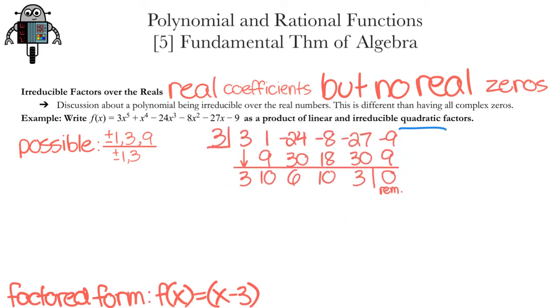Hmm, what should we try next? Well, I see that there are more multiples of 3, but there are also these tens. So I'll try negative 1 next. Drop down the 3, multiply by negative 1, negative 3, add to get 7, and so on. And the remainder is not 0, so negative 1 is not a zero of the function.